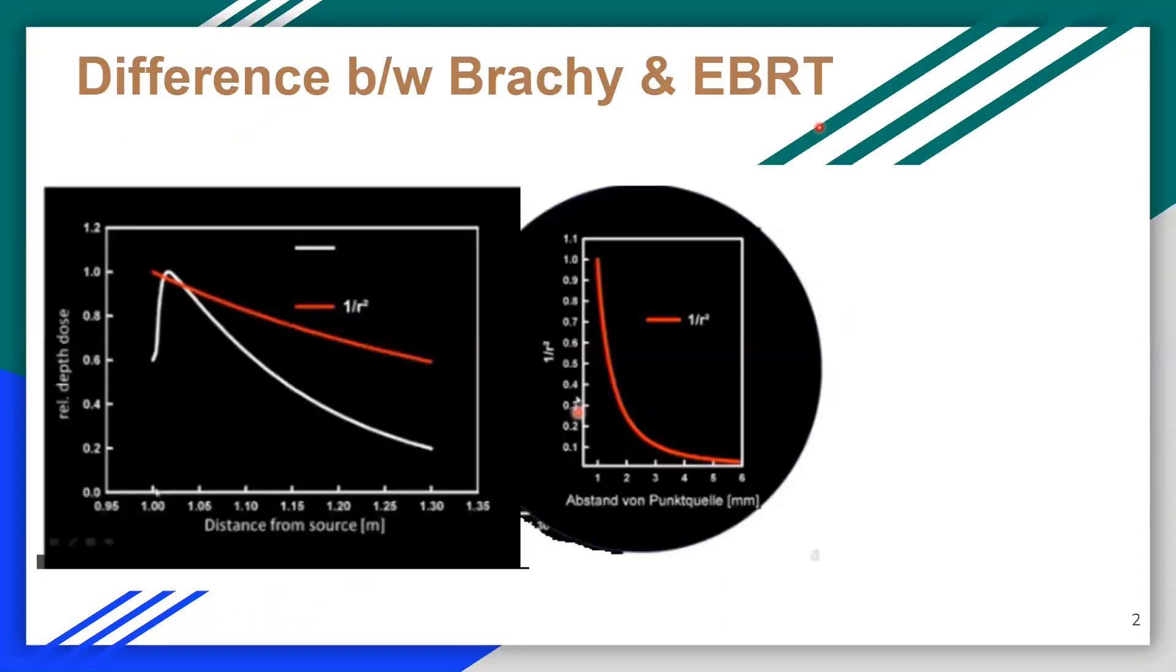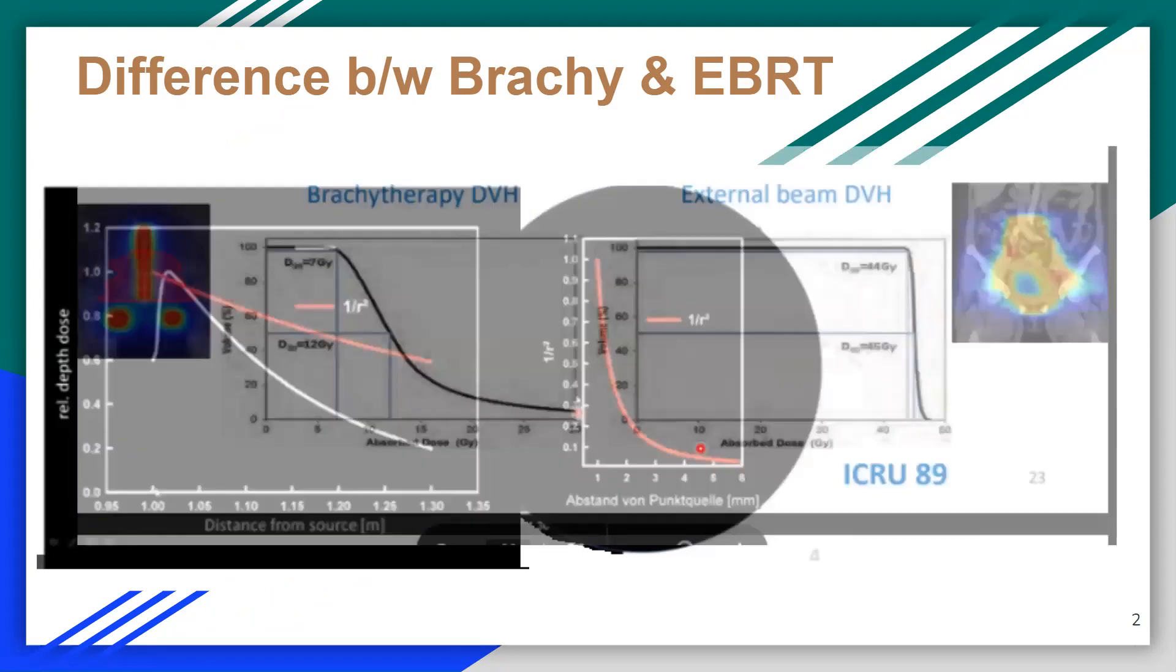The basic difference between brachy and EBRT is, you can see this is a photon 6MV PDD curve, whereas there is a brachytherapy. If we do it closer, it follows the inverse square law. So that's the rapid fall off. Brachy means short distance, so it's used for treatments where distance is quite short.